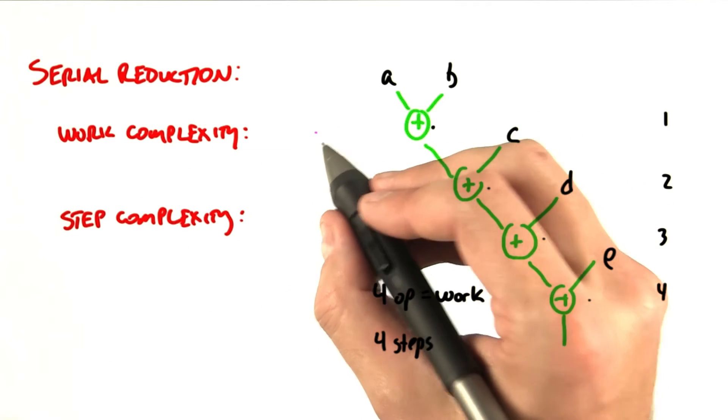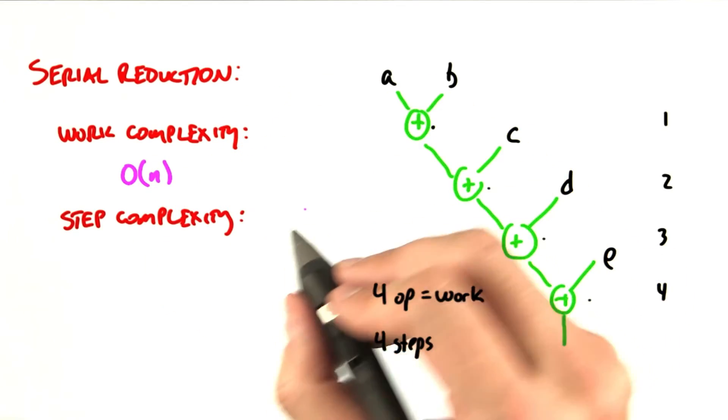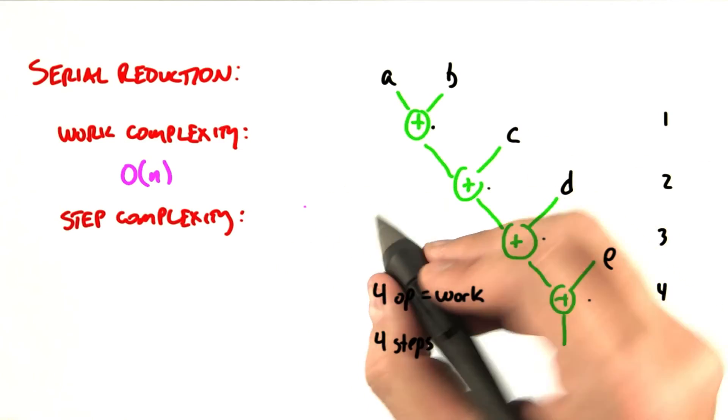So to sum up, our serial reduction algorithm has a work complexity of order of n. What that means is that the amount of work is linear in the size of the input.